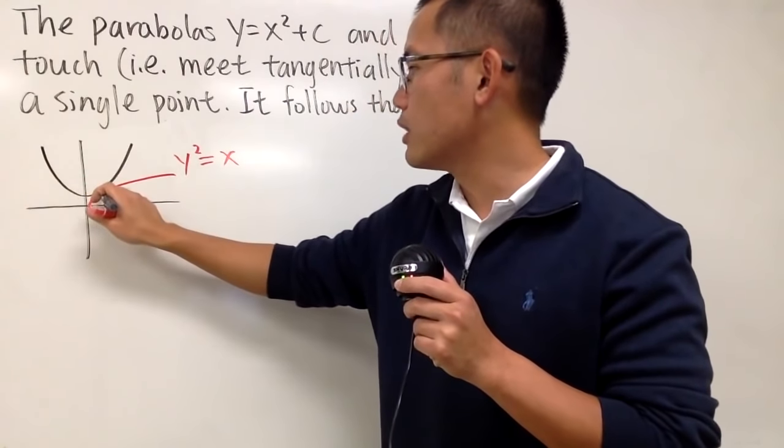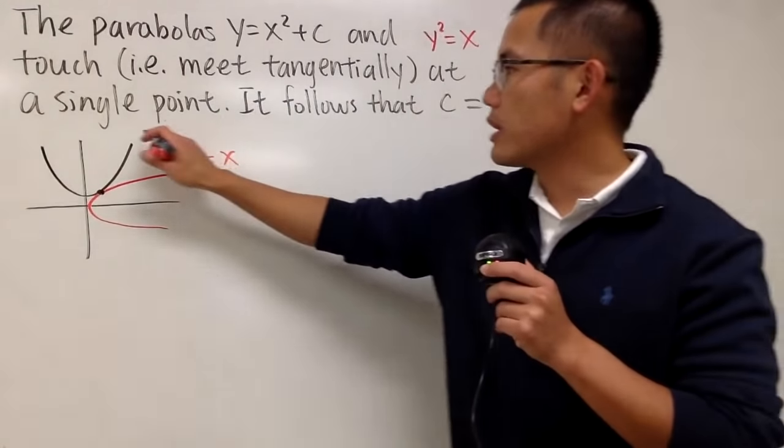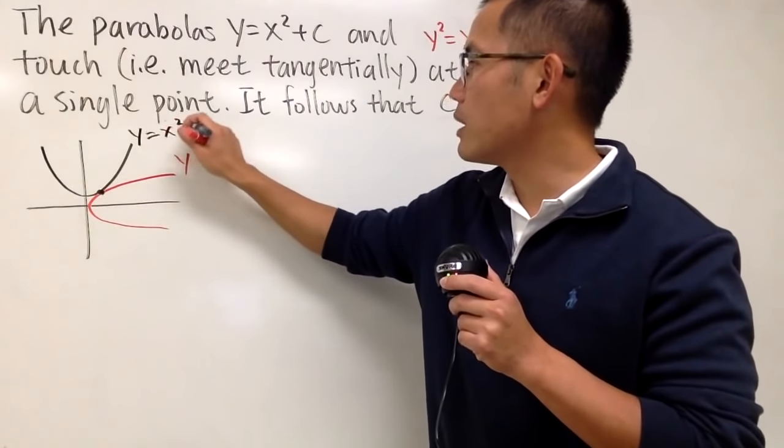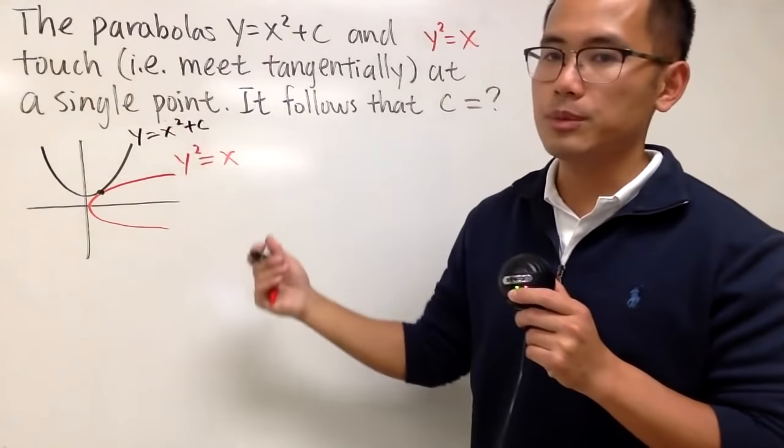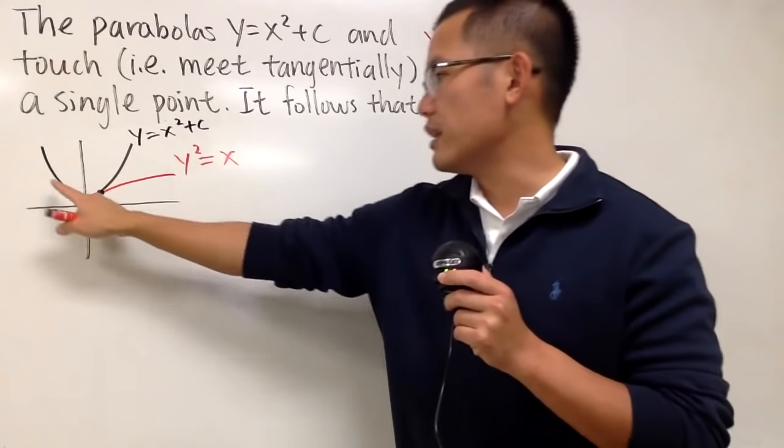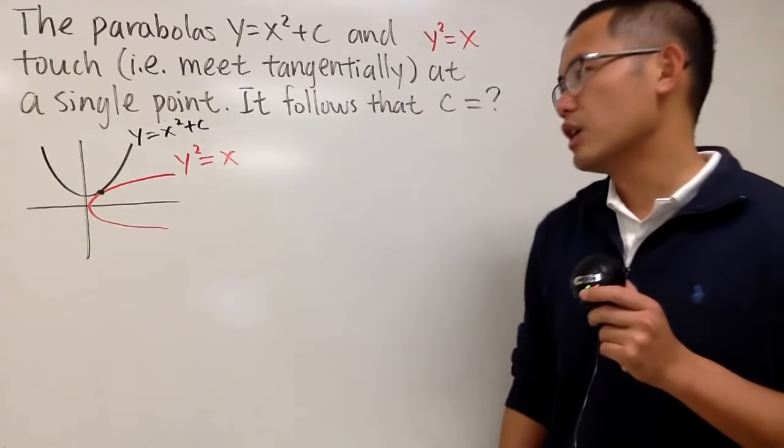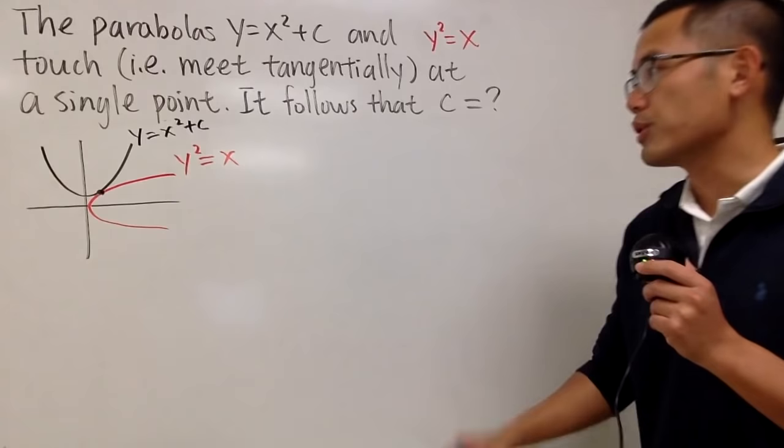And they touch each other right here. So this is of course y equals x squared plus c. And again, c has to be positive. If c is negative, then it will be down here. Then that means we cross the parabola more than one time. So that's no good.